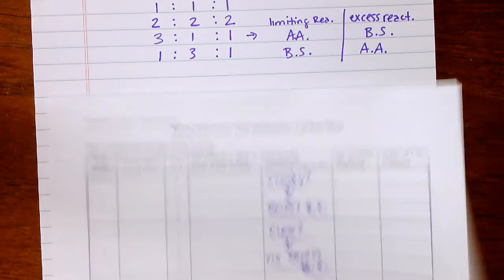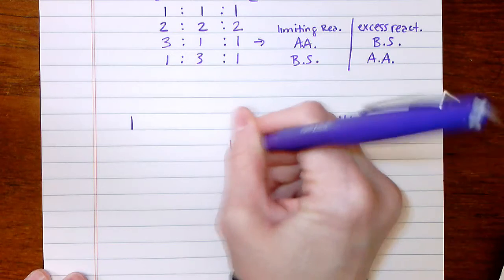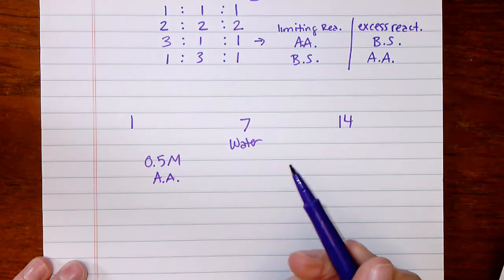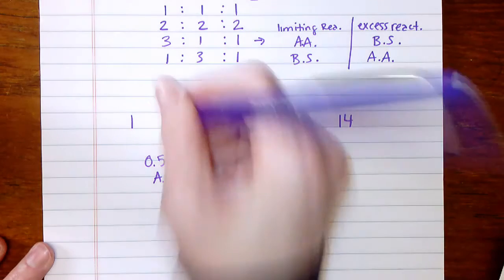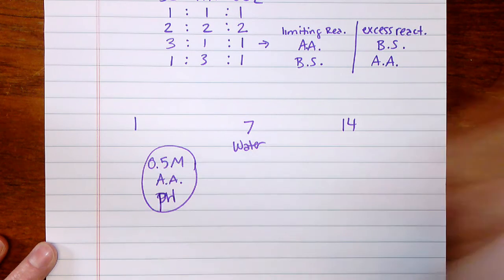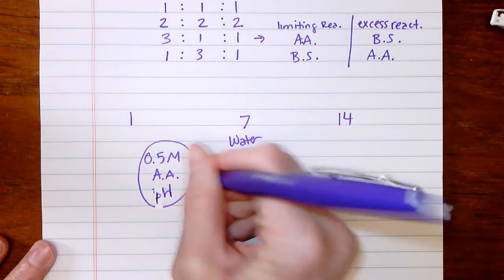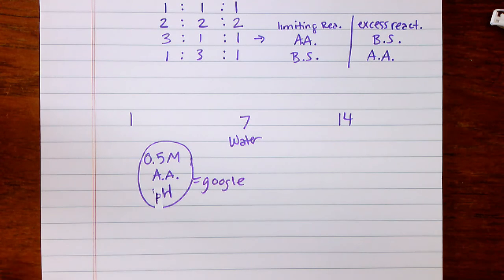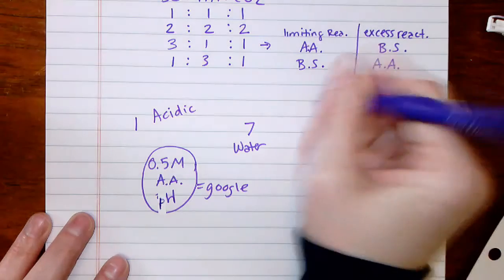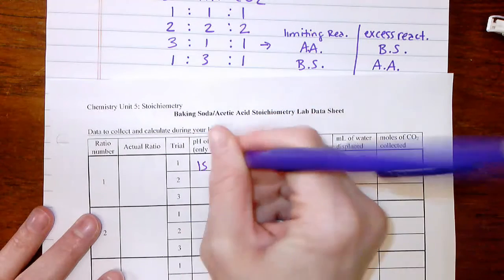Looking at the pH column: the pH scale goes from 1 to 14 with 7 in the middle — 7 is like water. The pH of 0.5 molarity acetic acid would be less than 7, and you should google what that exact value is. A pH lower than 7 means the solution is acidic, and above 7 is basic. That's why pH tells you whether acetic acid is still present.